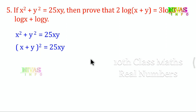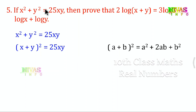We use the identity: (a+b)² = a² + 2ab + b². Comparing with our expression, (x+y)² = x² + 2xy + y². We are given x² + y² = 25xy, so we compare accordingly. Also note (x+y)² = 25xy corresponds to a² + b² = 25ab.